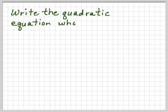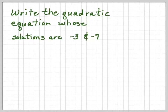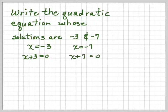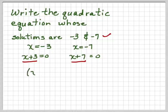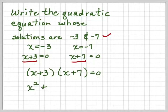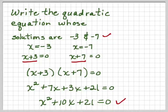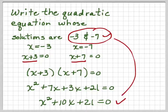Now let's try another one: write the quadratic equation whose solutions are negative 3 and negative 7. If x equals negative 3, we add 3 to both sides to get x plus 3 equals 0. If x equals negative 7, we add 7 to both sides to get x plus 7 equals 0. So we have x plus 3 times x plus 7 equals 0, which gives x squared plus 7x plus 3x plus 21 equals 0, or x squared plus 10x plus 21 equals 0.